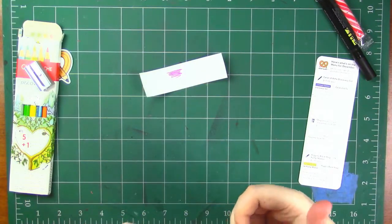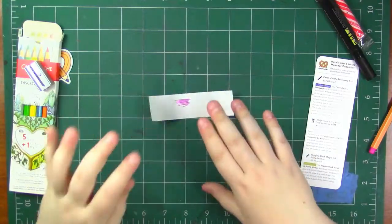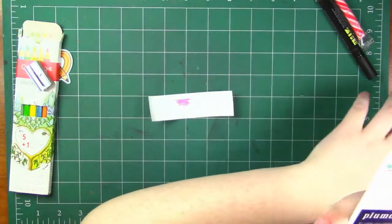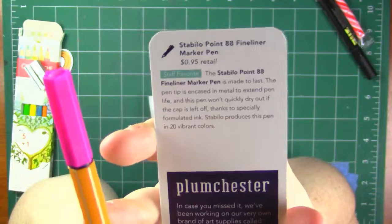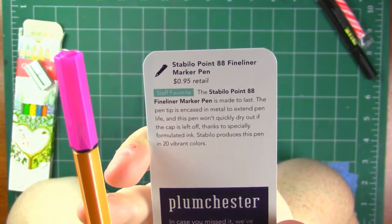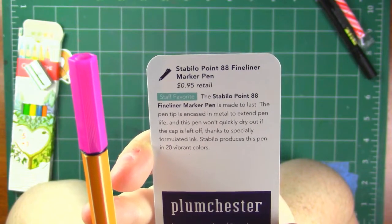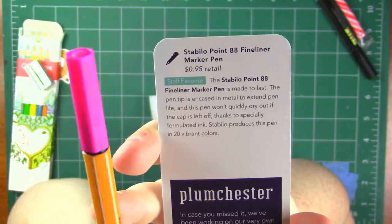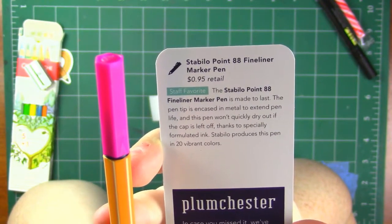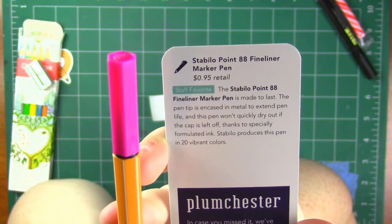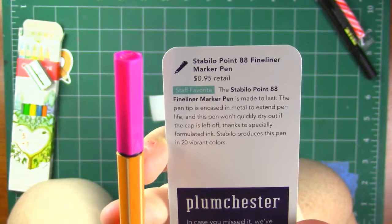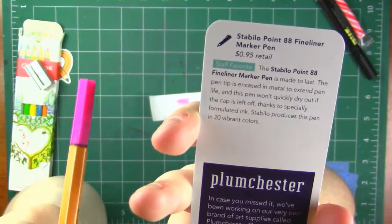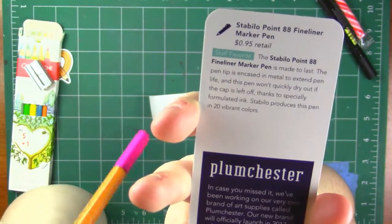I could have done that with the other stuff. I probably should have swatched the colored pencils. I will show you the swatch of the colored pencils before we go to the illustration. So here is what the card has to say about this. It is the Stabilo 0.88 fineliner marker pen, it is a 95 cent retail and this is a staff favorite. The Stabilo 0.88 fineliner marker pen is made to last. The pen tip is encased in metal to extend pen life and this pen won't quickly dry out if the cap is left off thanks to specially formulated ink. Stabilo produces this pen in 20 vibrant colors. I actually have one of these in black so I do know that it lasts a while and I really like it.